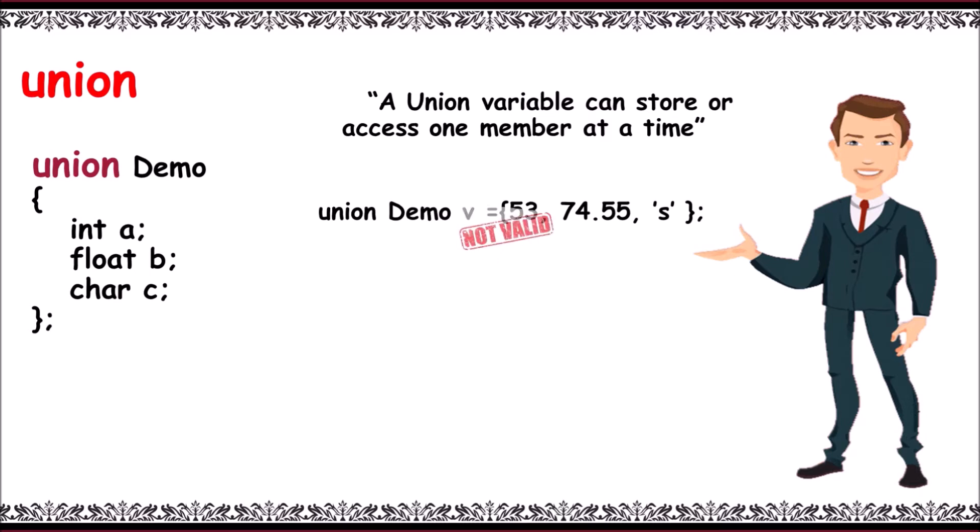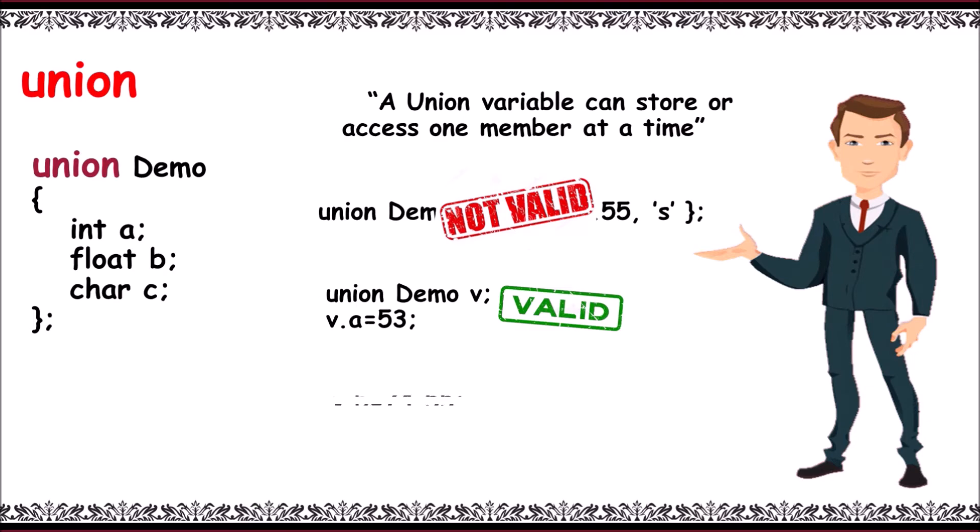The valid representation in union is: union demo v, then v.a = 53. It is valid as we are initializing one member. Next, on giving v.b = 74.55, it is also valid and it deletes v.a, then v.b value is updated as it stores a single member value at a time.